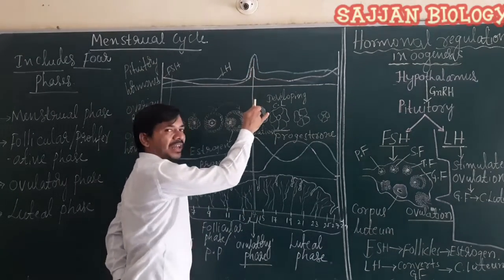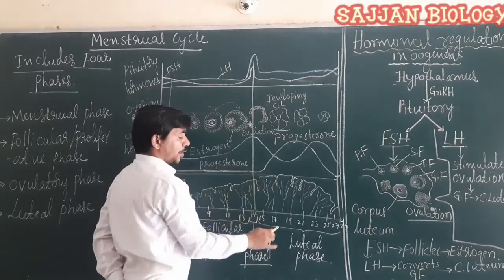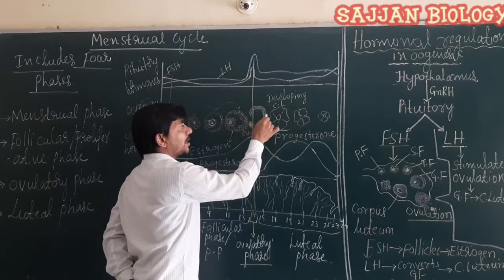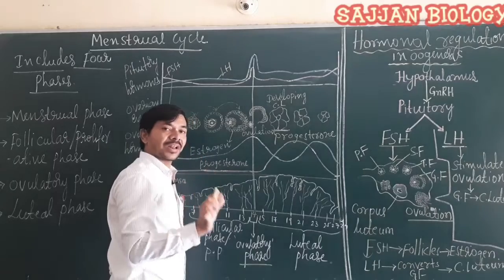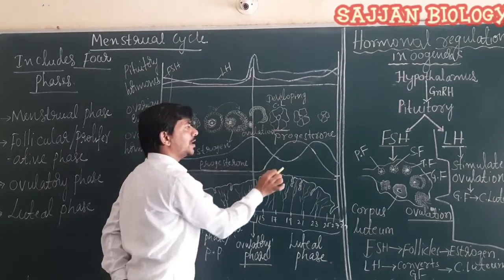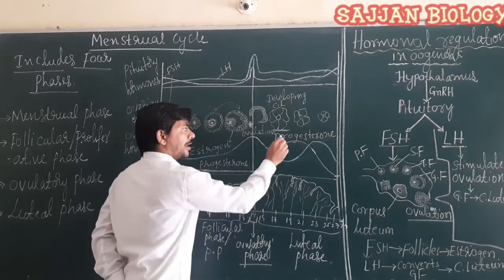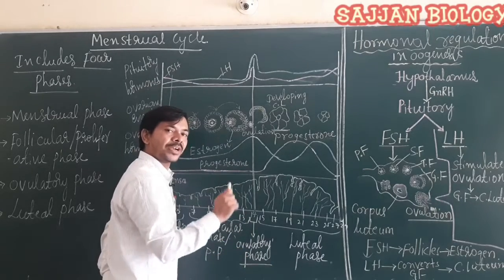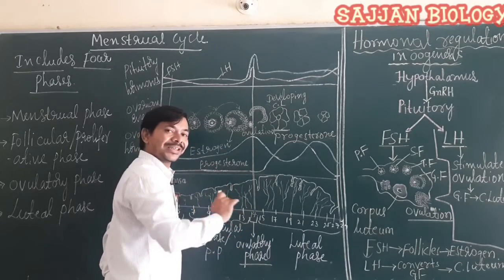During the luteal phase, the levels of LH and FSH decrease in the blood. The empty Graafian follicle — now acting as a temporary endocrine structure called the corpus luteum — starts to secrete progesterone hormone. This progesterone is very essential to maintain the endometrium wall of the uterus, so that if fertilization is confirmed, the zygote can implant on the endometrium wall.